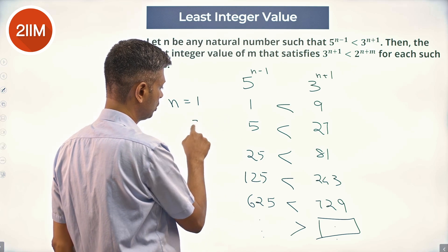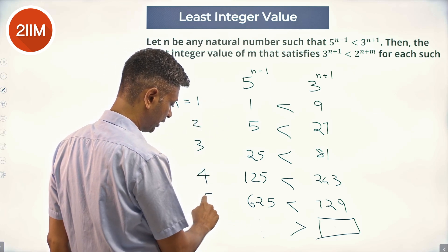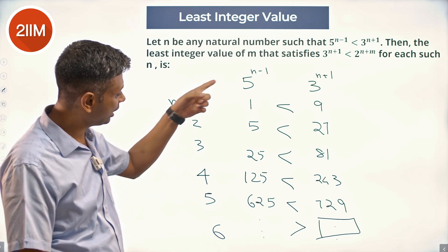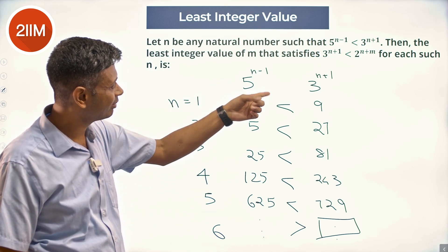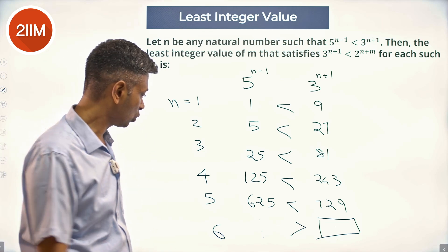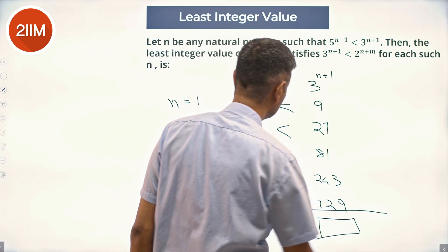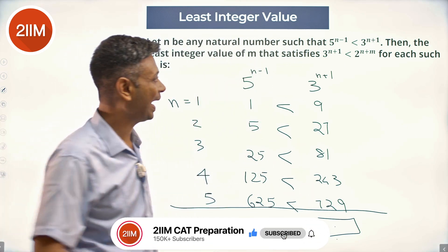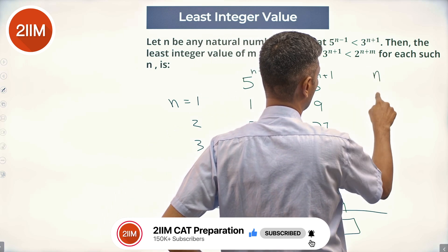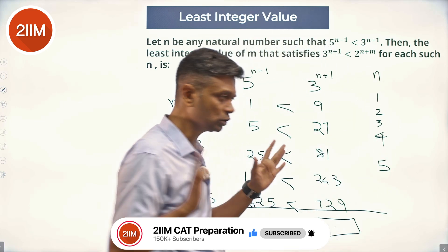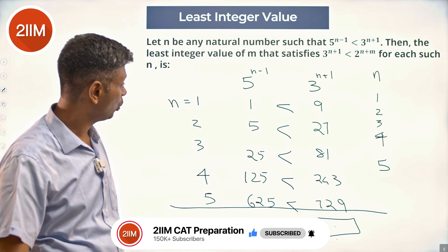n equals 1, 2, 3, 4, 5, 6. From 6 onwards, 5^(n-1) is greater than 3^(n+1). n could be 1, 2, 3, 4, or 5—one of these. 1, 2, 3, 4, 5 all work.